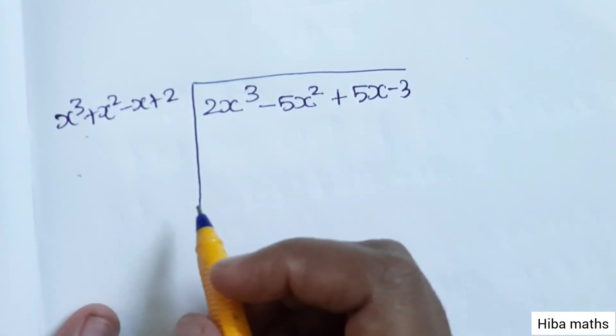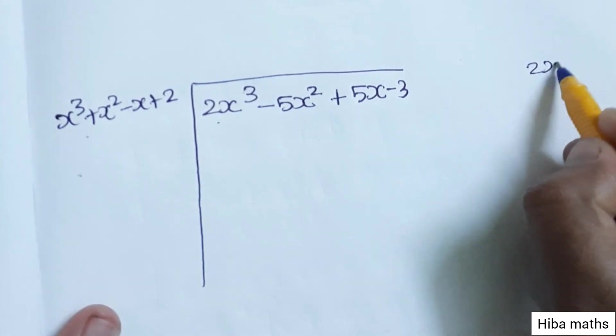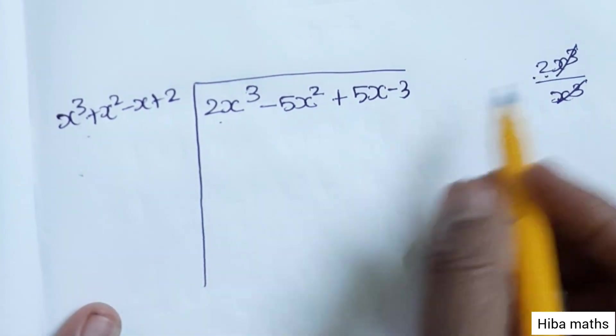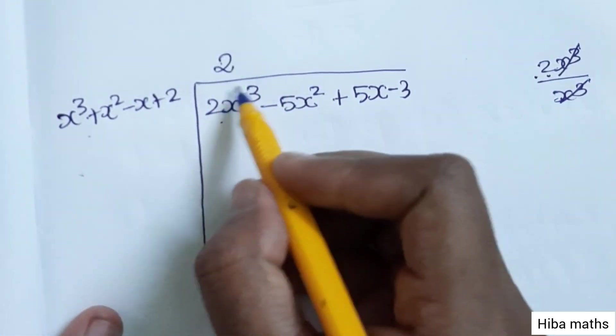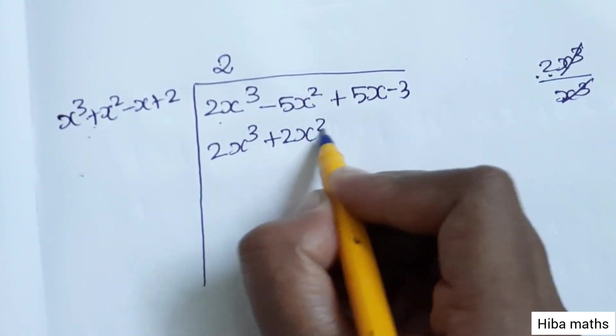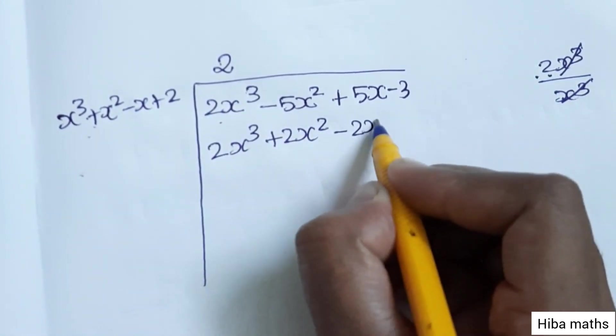Using the division format, the first number is 2x³, second number is x³. The balance of 2 is equal to 2x³ + 2x² - 2x + 4.